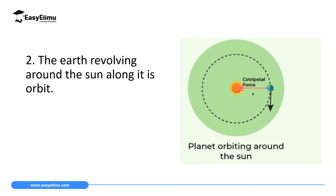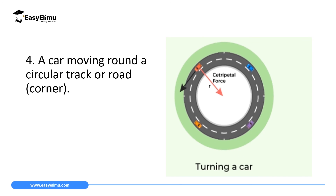Another case where centripetal force acts is the Earth revolving around the Sun along its orbit. From geography, we know many planets revolve around the Sun. As they revolve, they are kept at a certain position called an orbit. The force which holds them in that orbit so they cannot move away from it is called centripetal force. As you can see on the screen, the Earth is moving and there is a force maintaining it on that fixed path.